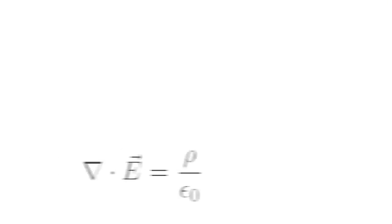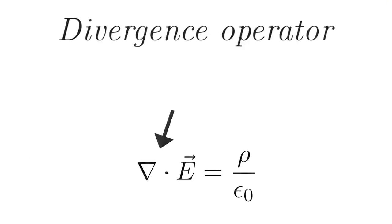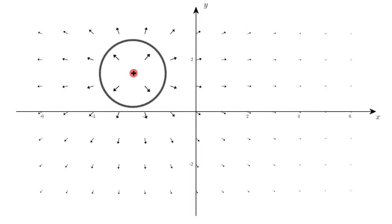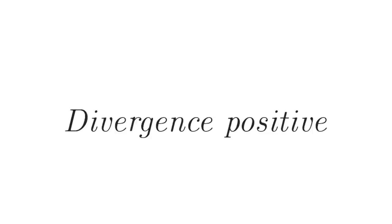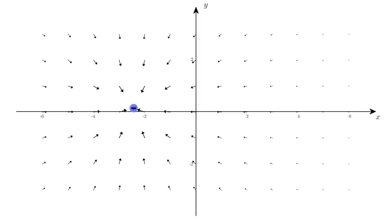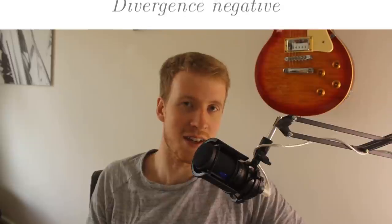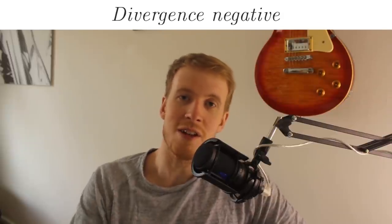A normal explanation of the divergence operator is that it measures flow around a vector field. For example, around a positively charged particle we see an outwards flow of vectors, so we say the divergence is positive. Around a negatively charged particle, the vectors point inwards as if the particle were a sink, so the divergence is negative.